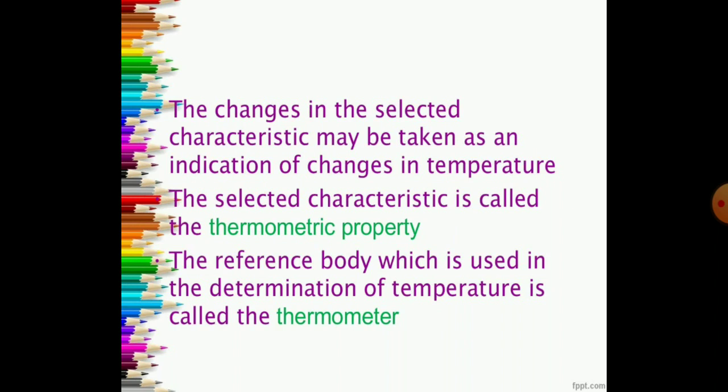We have already discussed that when the temperature of the hot body is continuously decreasing, while the temperature of cold body is continuously increasing. Now, this increment and decrement in temperature, we have to measure and record the particular temperature at points. That is why, to measure the temperature, we require the thermometer.